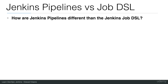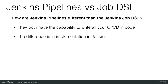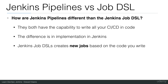How are Jenkins Pipelines different than the Jenkins Job DSL? They both have the capability to write all your CI/CD in code. The difference is in the implementation in Jenkins. Jenkins Job DSLs create new jobs based on the code you write.